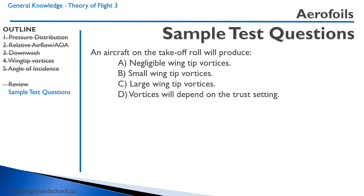Next question: aircraft on the takeoff roll will produce — A, negligible wingtip vortices; B, small wingtip vortices; C, large wingtip vortices; D, vortices will depend on thrust setting. Let's walk through it. Remember that wingtip vortices are directly proportional to the lift being produced. On the takeoff roll, an airplane will have an angle of attack the same as the angle of incidence for all intents and purposes — let's say 2 degrees — so very little lift is being produced. It's actually negligible, so the correct answer is A. There's no lift, so there are pretty much no wingtip vortices.